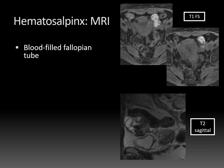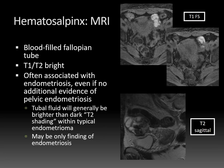Hematosalpinx is a blood-filled fallopian tube — T1 and T2 bright. It's often associated with endometriosis, even if there's no additional evidence of pelvic endometriosis. The tubal fluid will generally be brighter than the dark T2 shading seen in a typical endometrioma. An endometrioma is an endometriotic implant within the ovary, typically homogeneously light-bulb bright on T1-weighted images and dark on T2. With hematosalpinx, it's often T1 bright and T2 bright, and this may be the only finding of endometriosis. Anytime you see a hematosalpinx, assuming no ectopic pregnancy, think endometriosis.